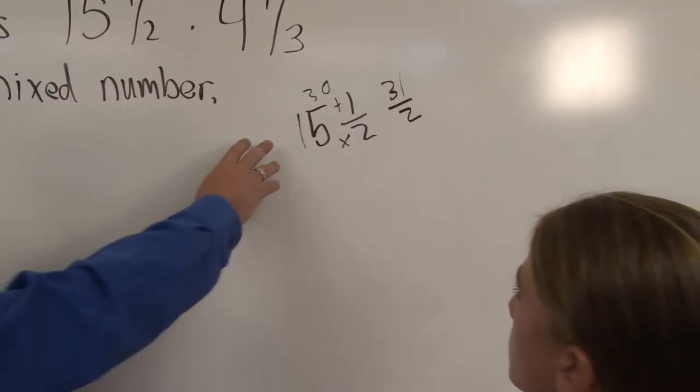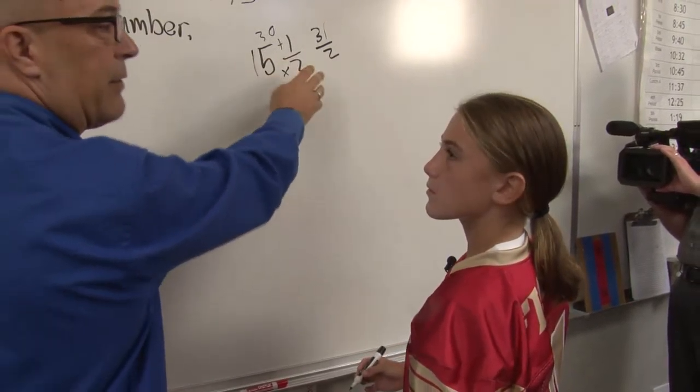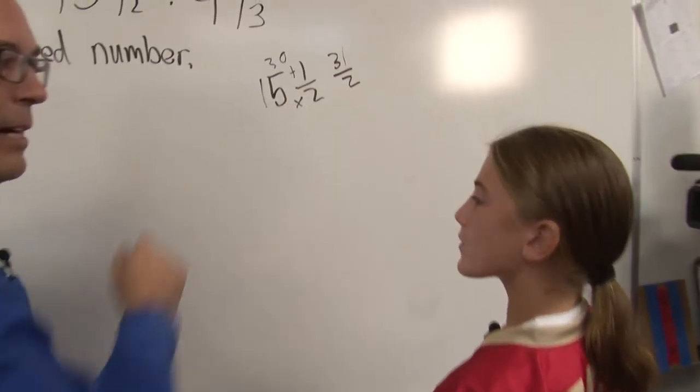Okay, so you said you were going to turn the mixed number into an improper fraction, which is what you did. Yes. But there's some students watching the program right now going, well, I don't understand how you go from 15 and a half to 31 over 2. So can you explain that process?